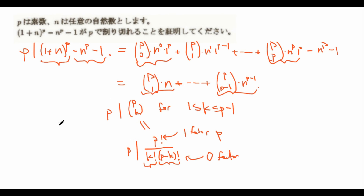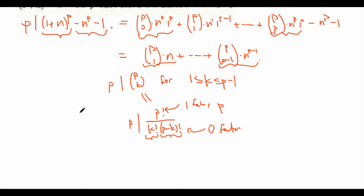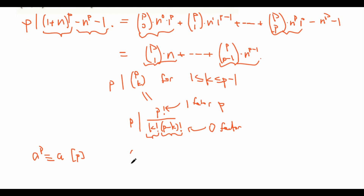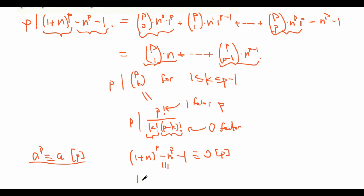But perhaps an easier way to do this problem is to use Fermat's Little Theorem. Fermat's Little Theorem states that a to the power of p is congruent to a mod p for any a. So if we apply this to our original problem, we want to prove that 1 plus n to the power of p minus n to the power of p minus 1 is congruent to zero mod p. Using Fermat's Little Theorem, this is congruent to 1 plus n minus n minus 1, which is obviously congruent to zero mod p. So we're done again.